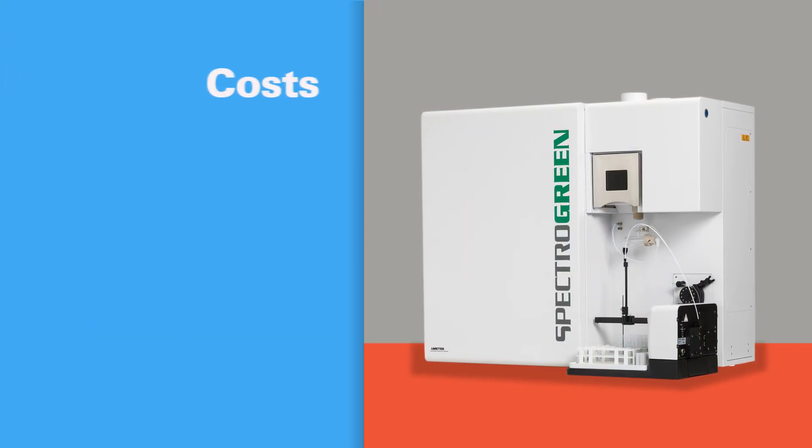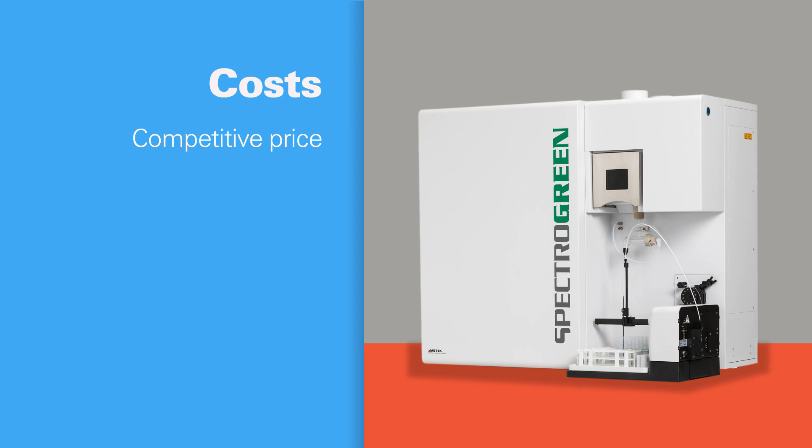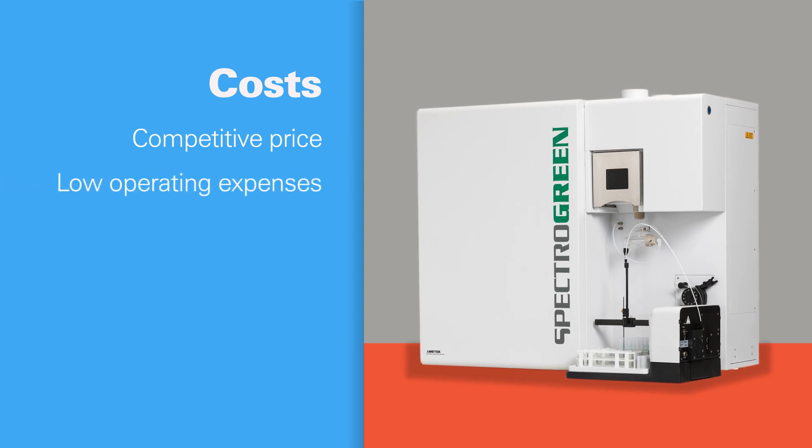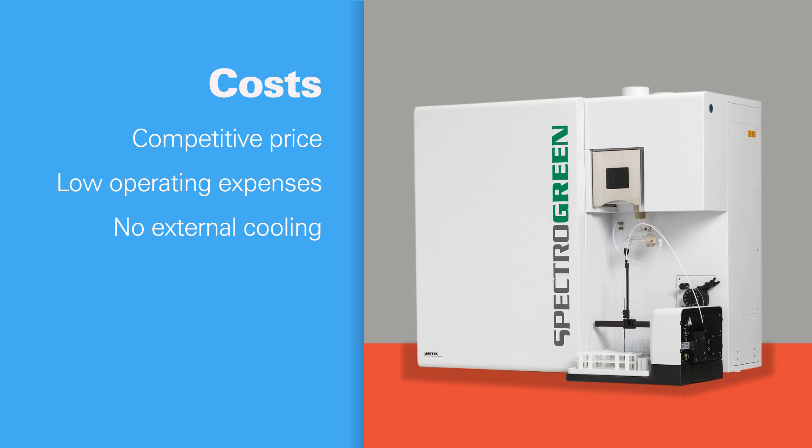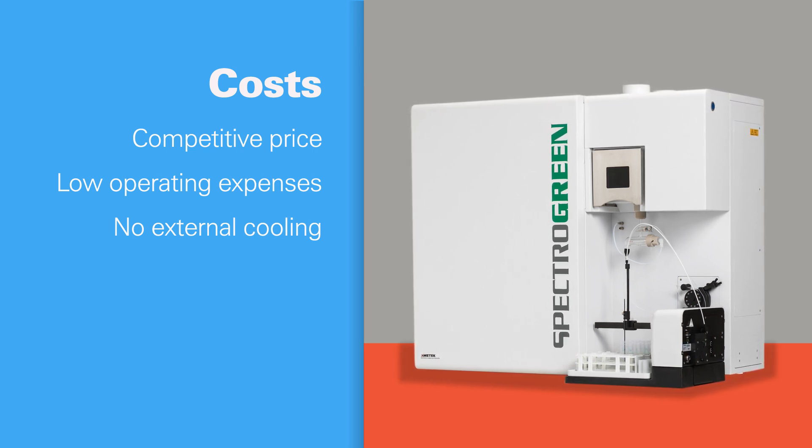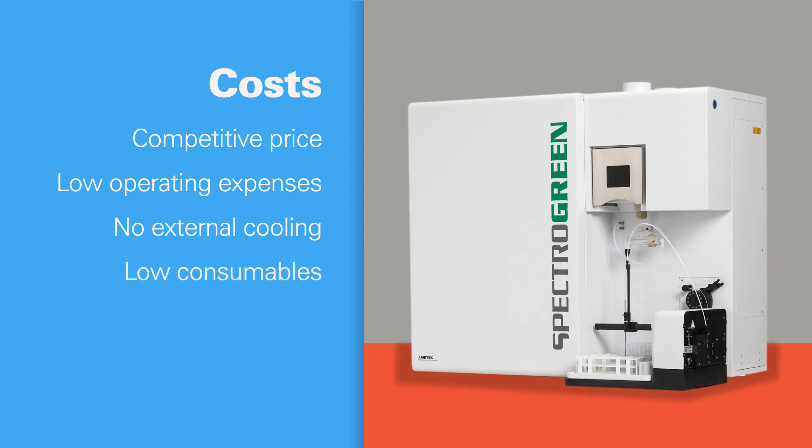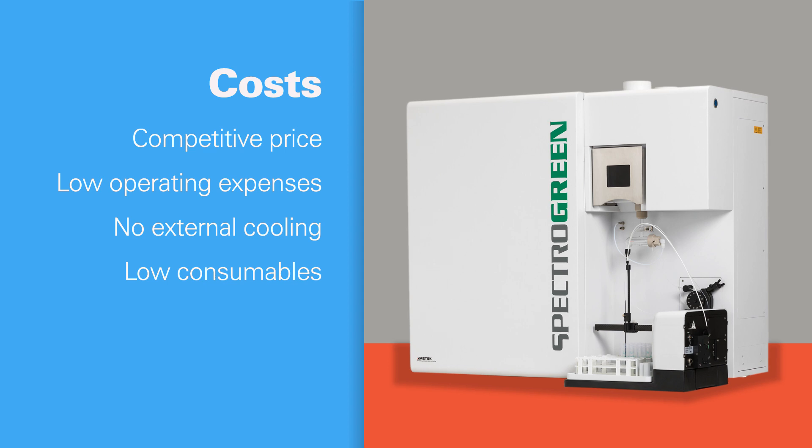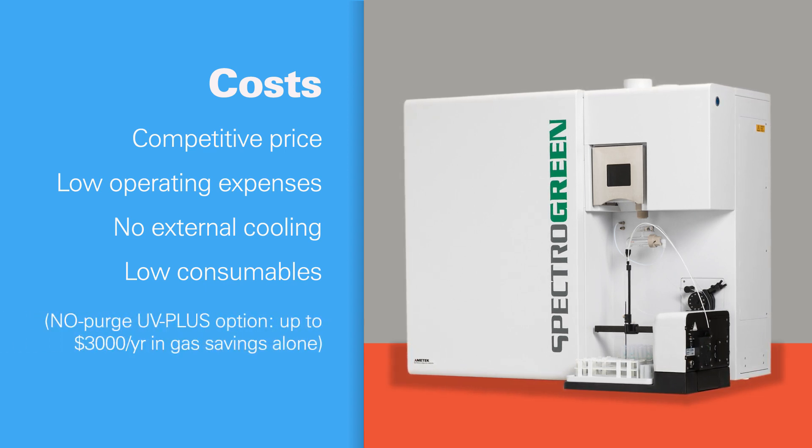Your SpectraGreen analyzer comes at a competitive price and performance ratio, plus perhaps the lowest operating costs in its class. For example, its unique air cooling system lets you forget about expensive, breakdown-prone external chillers. And its low-purge design consumes only a half-liter of argon or nitrogen a minute. Or choose the no-purge option and save an average three thousand dollars a year.